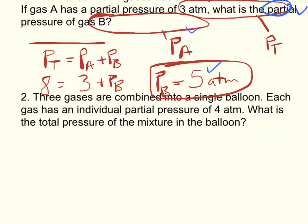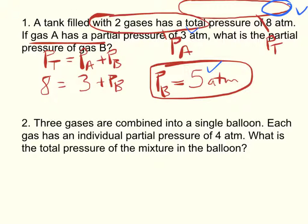Number two, different type of problem. Three gases are combined into a single balloon. Each gas has an individual partial pressure of 4 atm. What is the total pressure of the mixture in the balloon?